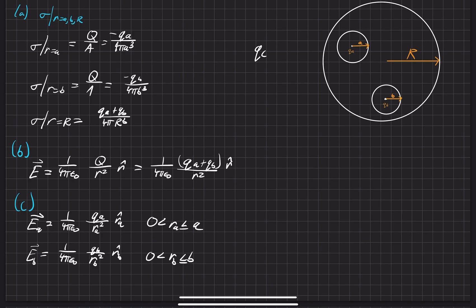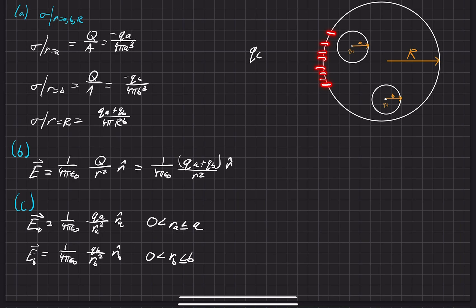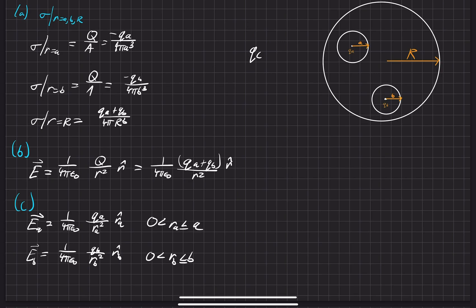As we bring this charge closer and closer, it's going to accumulate an equal and opposite total net charge on the surface of the sphere. Thanks to the principle of superposition, it's actually going to be equal to the sum of all three charges, except this one is going to be the negative charge.